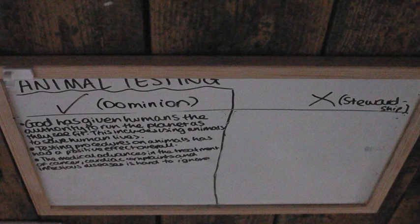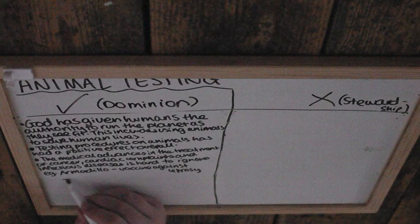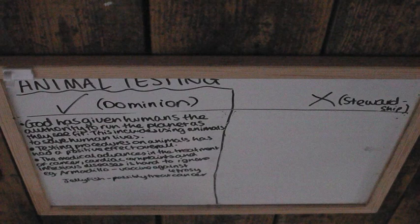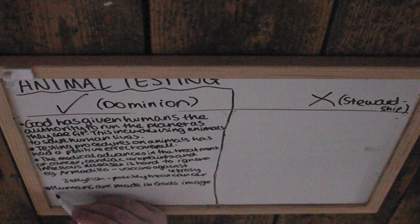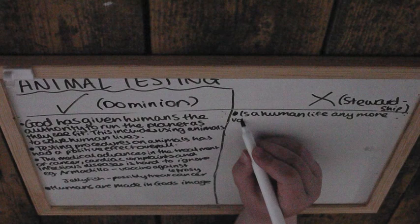Some examples of this include the armadillo, which has been used to develop a vaccine against leprosy, and jellyfish, which may possibly offer a way to treat cancer through testing. Additionally, humans are made in God's image according to the Bible, but animals are not mentioned in that same way.